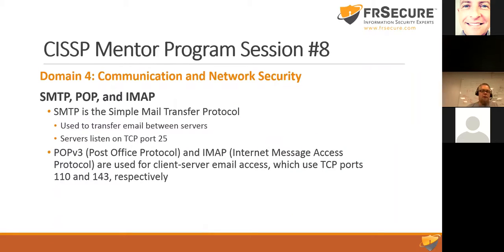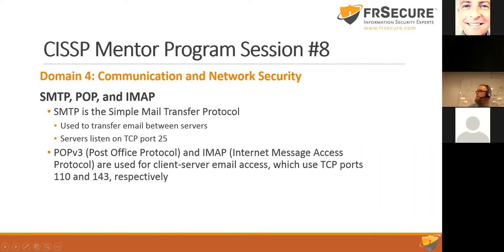SMTP, POP, and IMAP are all related to mail and mail messaging. SMTP is a store-and-forward protocol, transferring email between servers — not meant to transfer emails between clients and servers. Servers listen on TCP port 25. POP3 and IMAP are two other protocols used for email — TCP port 110 and 143 respectively. Quick quiz: who knows what port NNTP uses? Network News Transfer Protocol. It's 119.